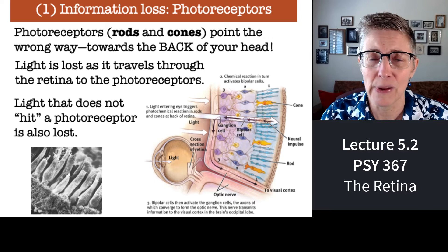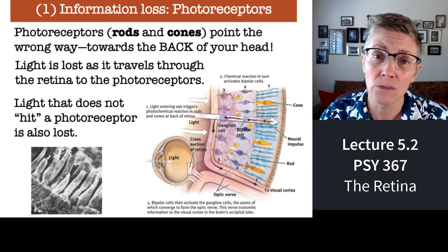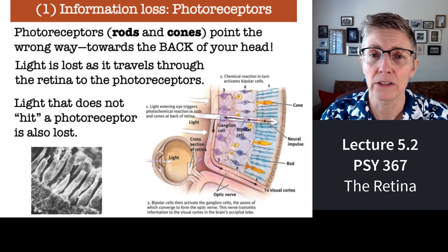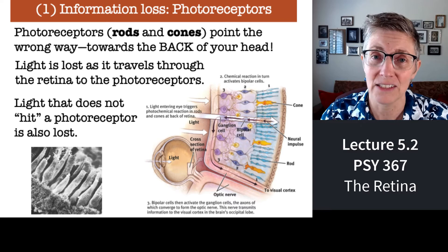So all the light that comes into your eye has to go through all these layers of tissue to try to reach the tips of the rods and cones. Not all the information makes it — a lot gets absorbed by the different cells and tissues in between. Information that falls between rods and photoreceptors is lost. Any light that does not fall on a photoreceptor, you have no record of it. As far as you know, it doesn't exist because your brain hasn't detected it.